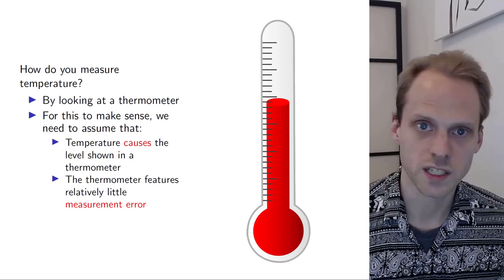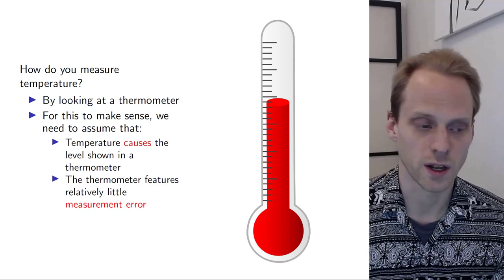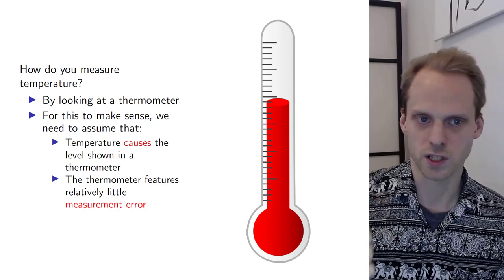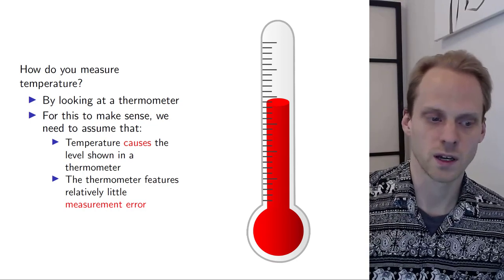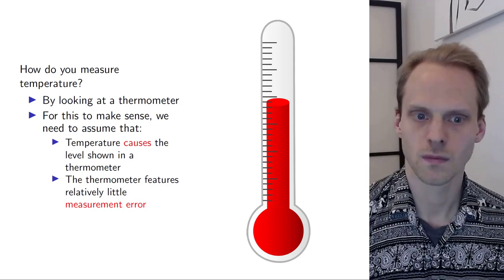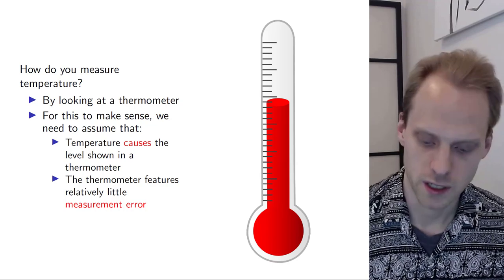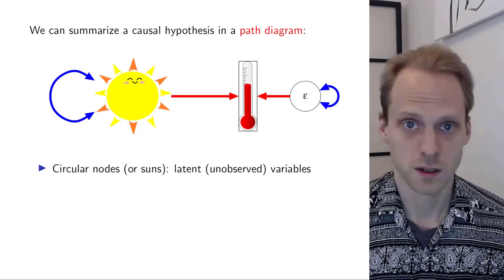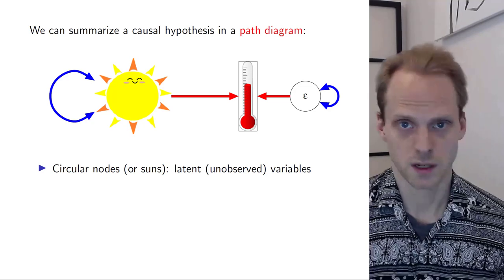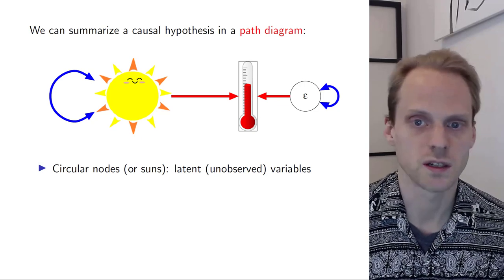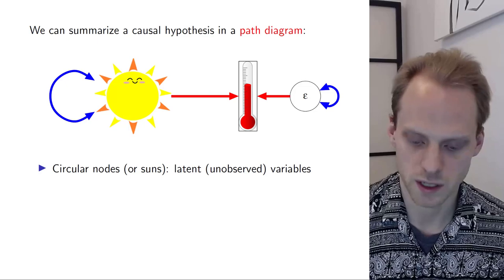The second assumption is that this device is quite reliable, that it doesn't have a lot of measurement error. By that I mean that if I measure a thermometer now and look again in a minute or five minutes, I get roughly the same values. Now with these assumptions in check, we could start forming a hypothesized model. And to do that, we can draw our model using a path diagram, rather than using mathematical expressions — a nice diagram with arrows, circles, and boxes.